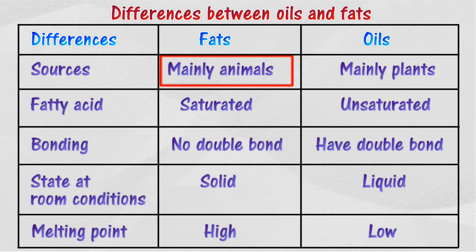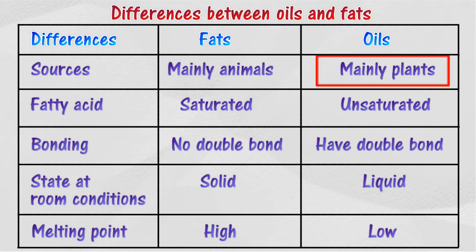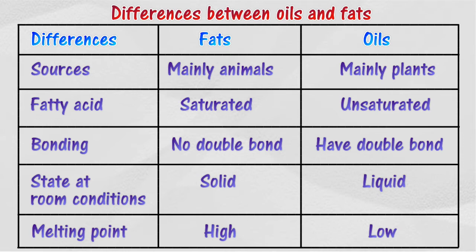Oils differ from fats in some aspects. Fats can be found in animals, while oils are usually found in plant seeds such as palm oil, nuts, corns, and coconuts. Fats are produced from the reaction between saturated fatty acids and glycerol. Saturated fatty acids contain single covalent bonds only.